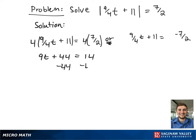Then, to get rid of the single term, we'll subtract both sides by 44. This results in 9t equals negative 30.